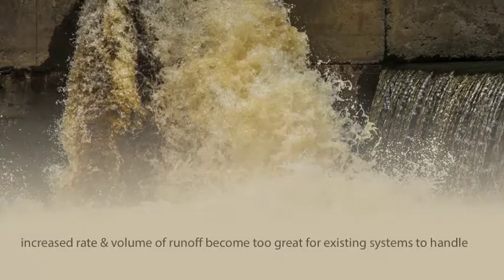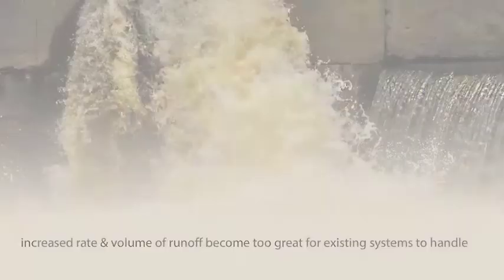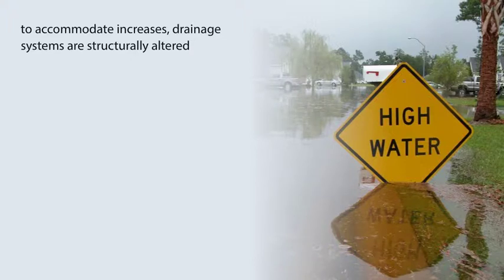Often the increased rate and volume of runoff become too great for existing drainage systems to handle. In order to accommodate the increases, drainage systems are structurally altered through the use of curbs, gutters, channels, and storm sewer pipes to direct and convey runoff away from developed areas.